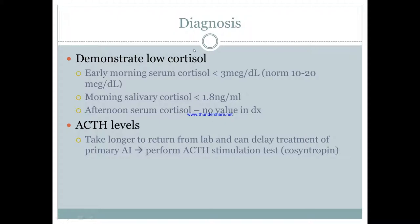In terms of diagnosis, there are two things you need to do: first, prove that it is adrenal insufficiency, and second, locate where the problem is. To demonstrate adrenal insufficiency, you need to show low cortisol. Do an early morning serum cortisol — it should be less than 3, since normal is 10 to 20. You do it early morning because that's when cortisol levels are highest. If cortisol is low when it should be at its peak, you know there is general insufficiency. You can also do morning salivary cortisol, but not afternoon serum cortisol due to high afternoon variability.